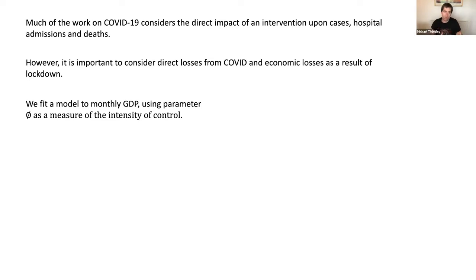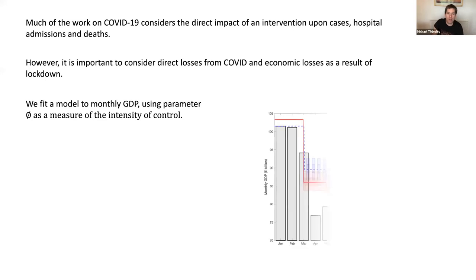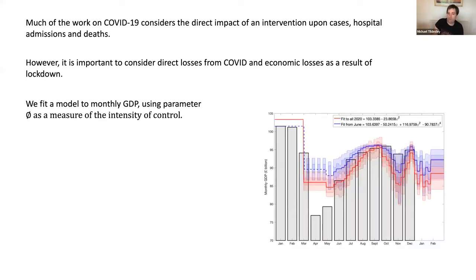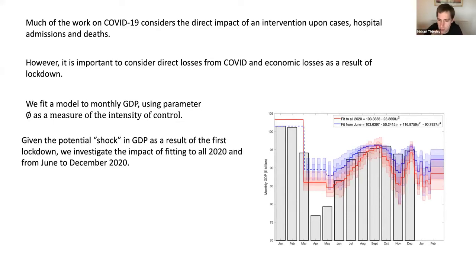This is very much a proof of concept, but what we were trying to do is put something in place to tease out how the optimal policy may change if we think about cost. We started off looking at monthly GDP, using our intervention intensity parameter phi as a measure of how much control there was in the system, and we basically fitted a polynomial with that phi to monthly GDP through time in 2020. Dependent upon how severe the lockdown was, that gives us some measure of what the GDP was.